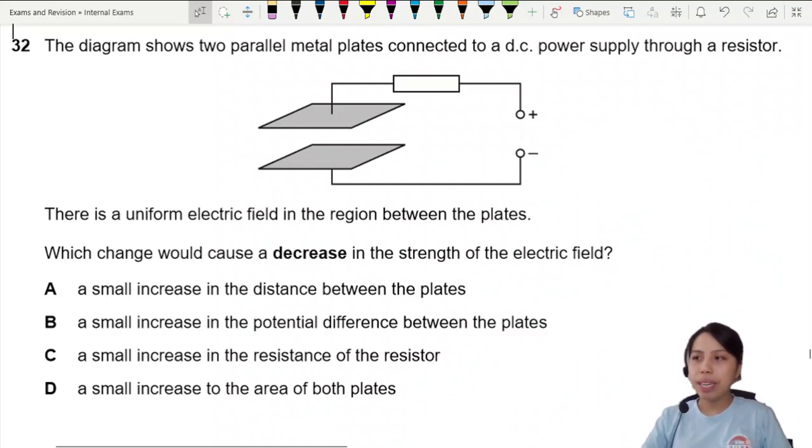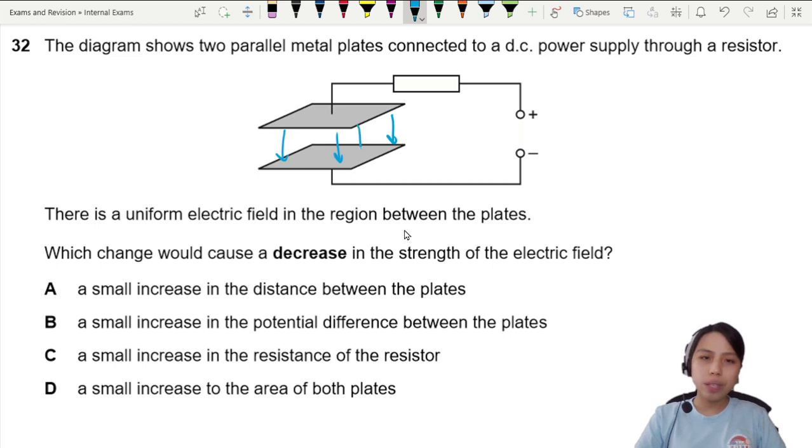The diagram shows two parallel plates connected to a DC supply. There's a uniform field between the plates. Makes sense. I'm gonna go from here to here. By the way, this looks like a capacitor.